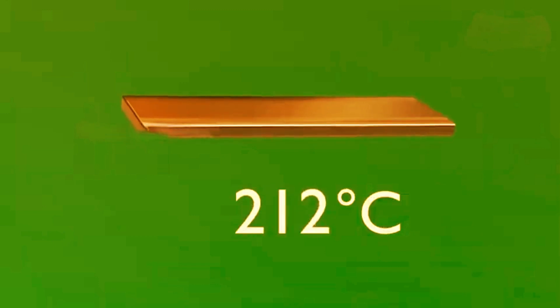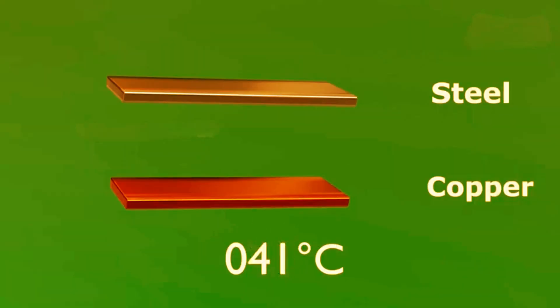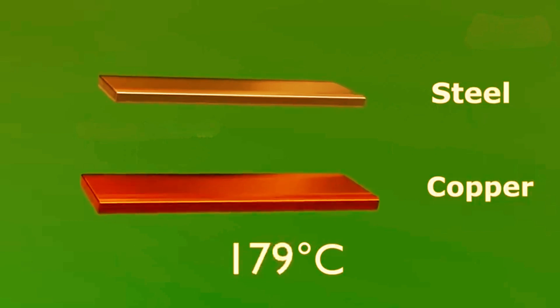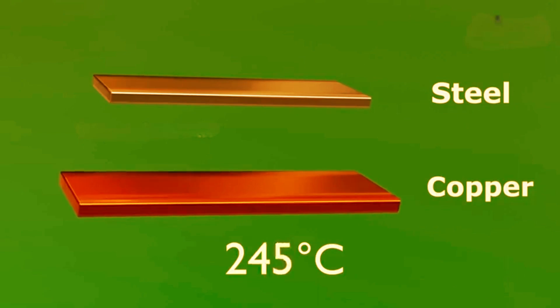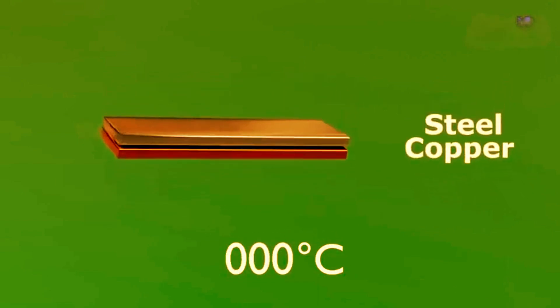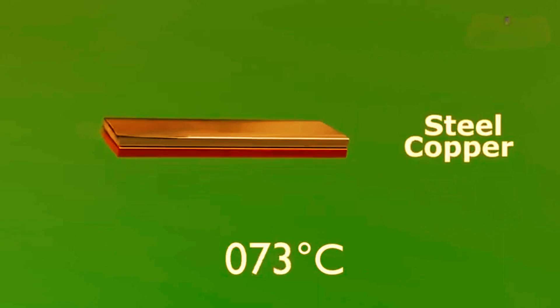If you heat these metals together, the metal strip bends towards the metal that expands less. In this case, it is steel. This bending helps the thermostat turn the heat on and off.